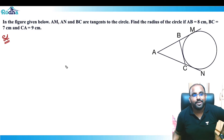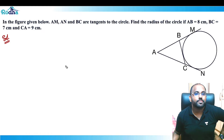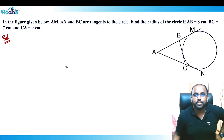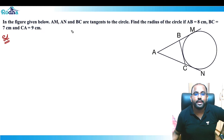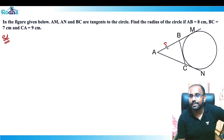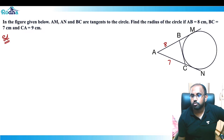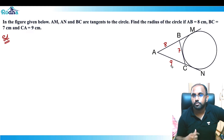Let's look at the next question — a typical CAT-level question involving two or three concepts. It says that in the figure given below, AM, AN, and BC are tangents to the circle. AB is 8 cm, BC is 7 cm, and CA is 9 cm. We need to find the radius of the circle.